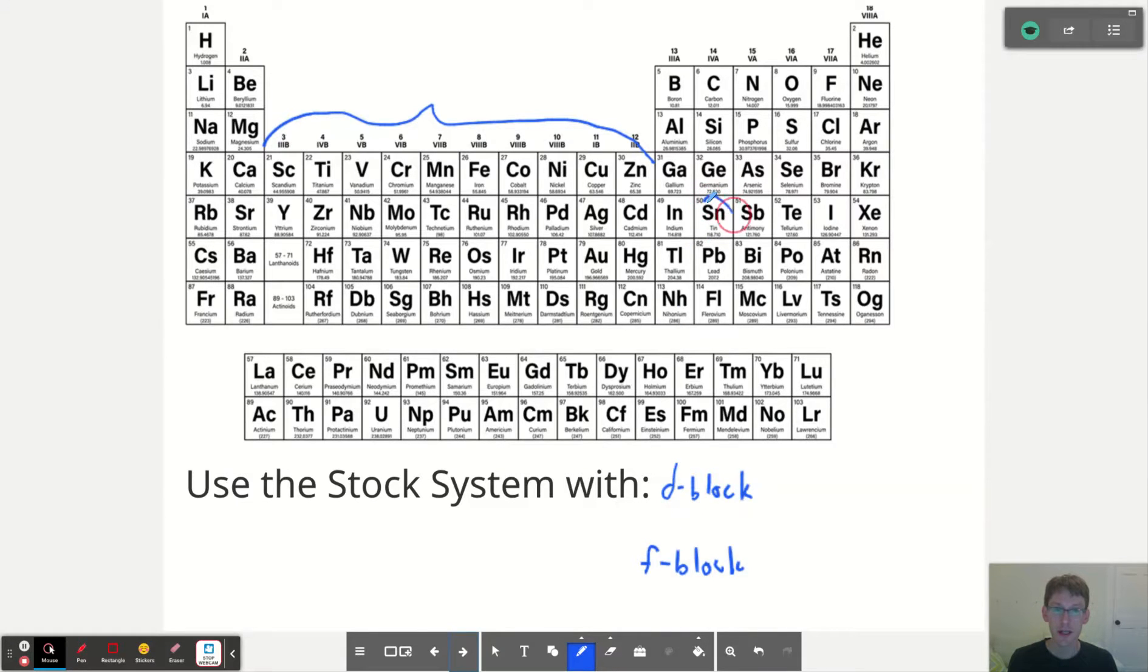So we need to use the stock system with any d-block metals and also with any f-block metals, because those are not main group metals either. Additionally, we need to use the stock system for tin or lead because both tin and lead can take on positive two or positive four charges, which is uncommon. That's the actual only exception because when we get outside of the d-block and f-block, pretty much everything follows the patterns that you're expecting. But these could be plus two or plus four. They have two different possibilities.